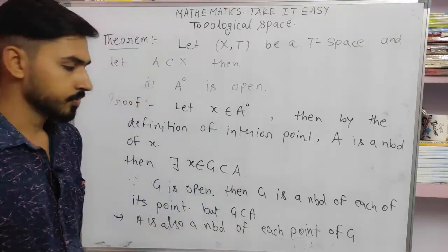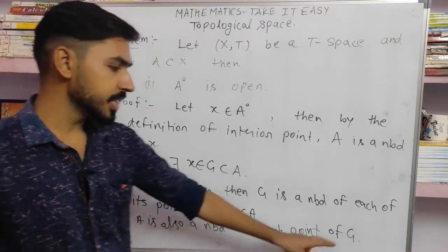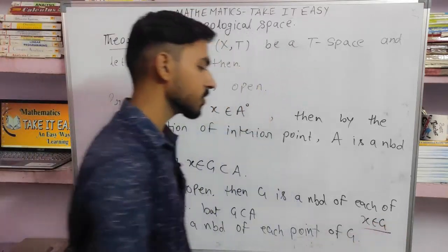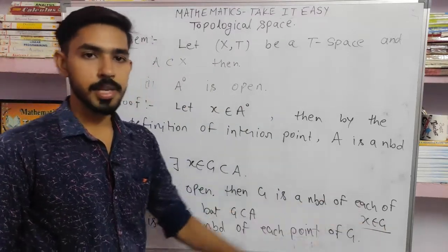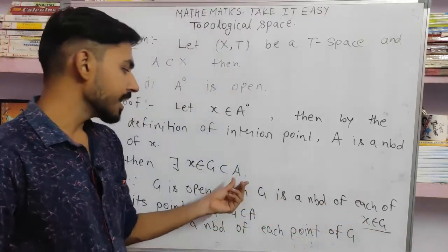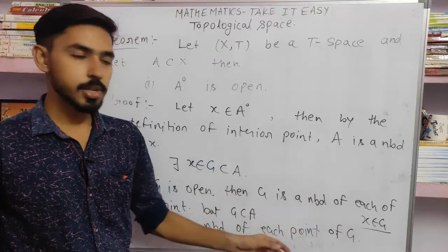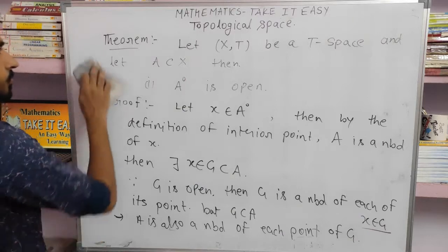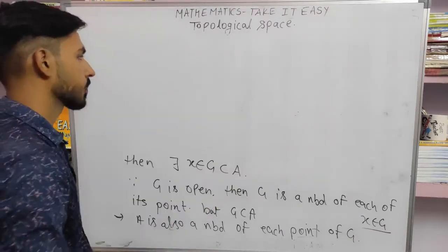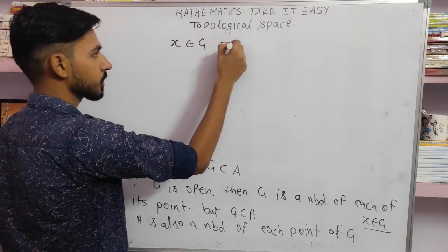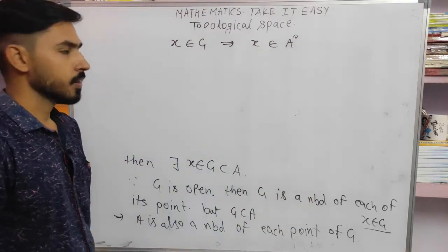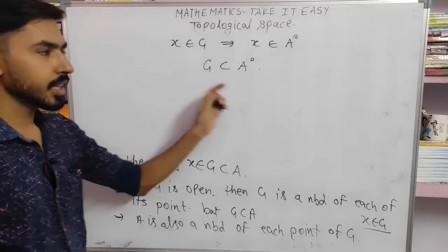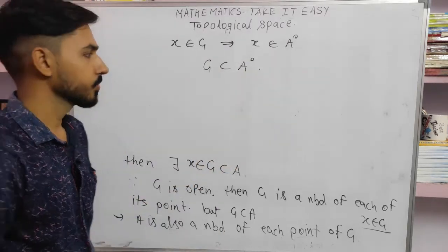If A is a neighborhood of each point of G, then all elements of G are interior points of A. So x belongs to G implies x belongs to the interior of A. Since all elements of G belong to A interior, G is a subset of A interior.